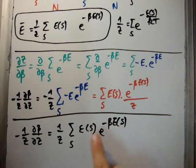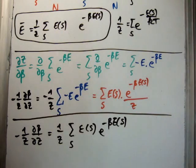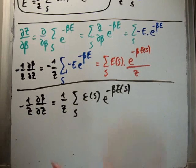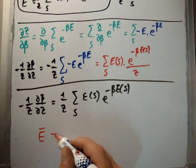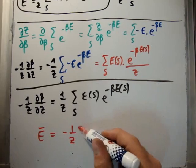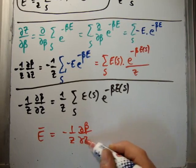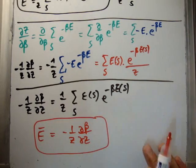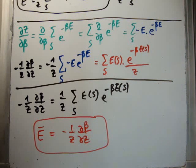So we see that this is the same as up here. So the conclusion we can say is to get the average energy of our system is equal to minus 1 over the partition function del beta del z. Who cares, you might ask yourself, who cares? What's the difference? What's the big deal?